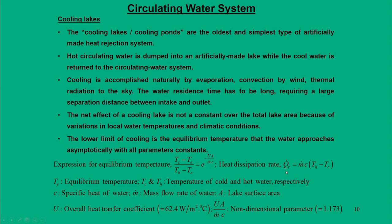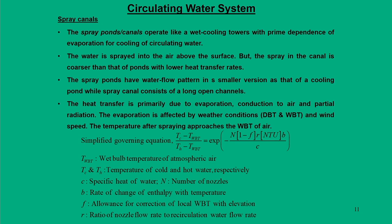Spray canals are similar to cooling tower concepts. Water is sprayed into air above the surface and flows through a channel. Heat transfer takes place by evaporation, convection, and partial radiation. Since air comes into picture, dry bulb temperature and wet bulb temperature must also be considered. Similar governing equations apply. However, in all modern steam power systems, these old concepts of spray canals or artificial ponds are no longer used.